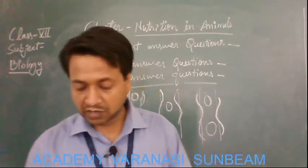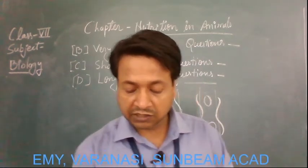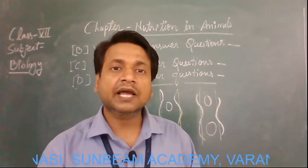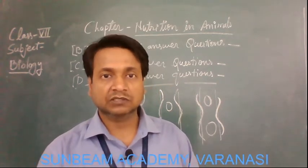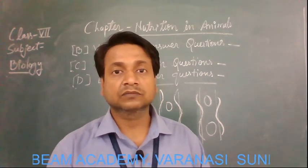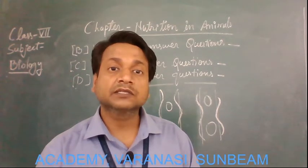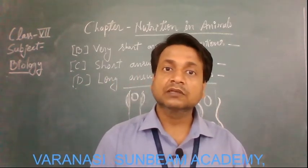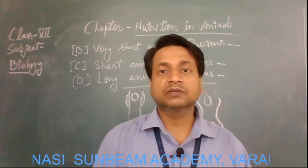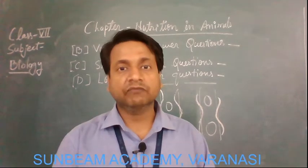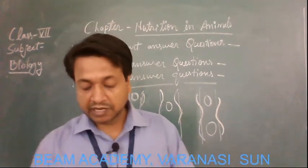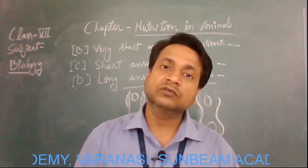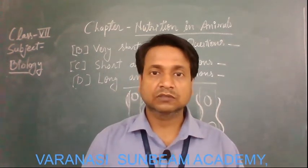Question number seven: Explain how digested food is absorbed into the blood. Our small intestine has a large number of finger-like projections known as villi. The function of villi is to increase the surface area in the small intestine. Because of this increased surface area, the digested food can easily be absorbed by the blood capillaries present in the walls of the villi. Finally the food goes into the blood and reaches different body tissues.